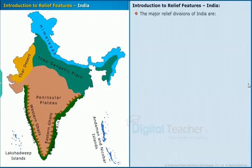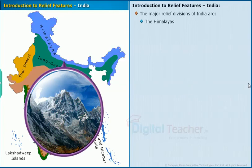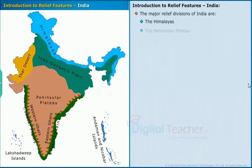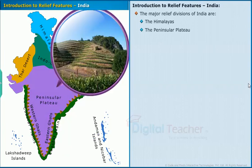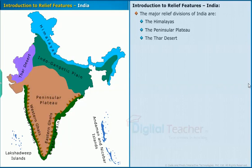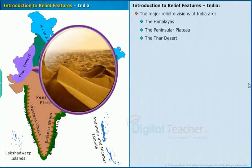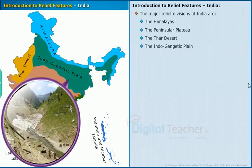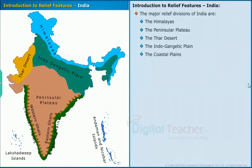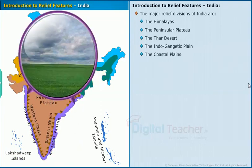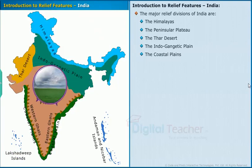The major relief divisions of India are: The Himalayas, The Peninsular Plateau, The Thar Desert, The Indo-Gangetic Plain, The coastal plains, and The islands.